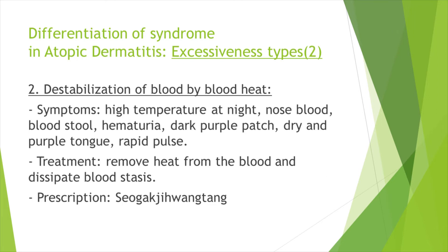Second, noxious fire in the blood can cause destabilization of blood and AD. Symptoms include high temperature at night, nosebleed, blood in stool, hematuria, dark purple patches, dry and purple tongue, and rapid pulse. Treatment is to remove heat from the blood and dissipate blood stasis. For this type, seagakjiwangtang can be prescribed.